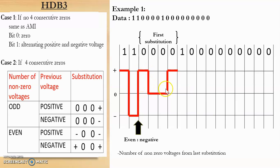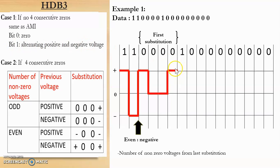The next bit is 1, and at this point there are no 4 consecutive zeros. We use case 1: same as AMI. According to AMI, bit 1 uses alternating positive and negative voltages. The previous voltage level was positive, so this 1 will be encoded as negative.